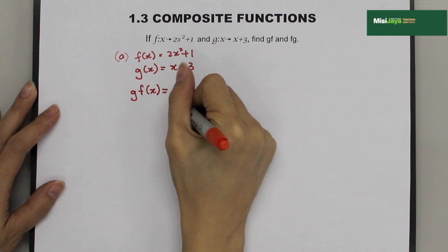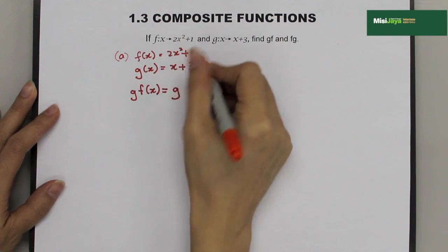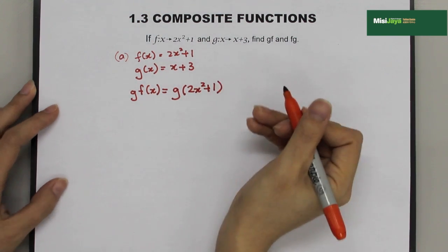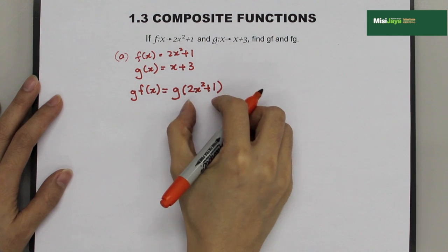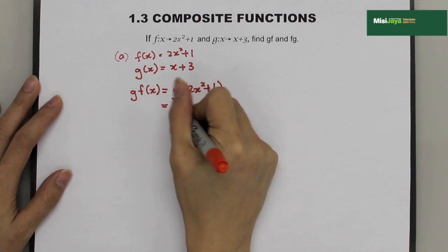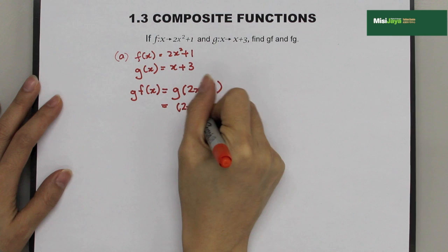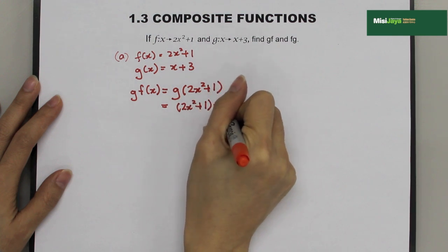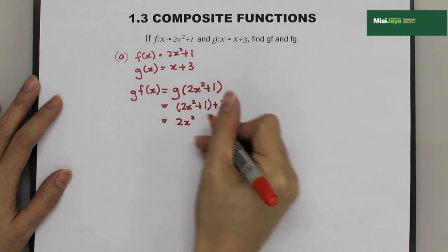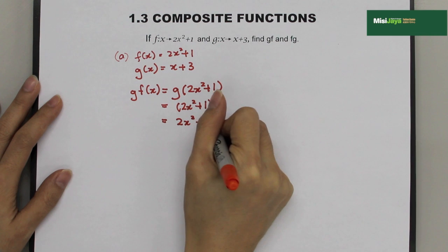So, g. So, f(x) is 2x² + 1. So, we're going to substitute this 2x² + 1 into g function. Then, we open up the bracket.